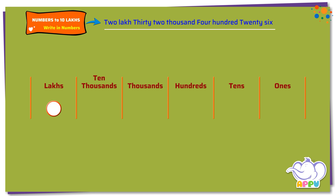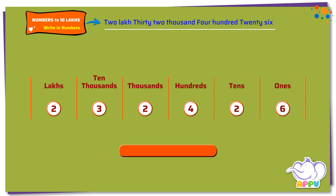We have two lakhs, three ten thousands, two thousands, four hundreds, two tens, and six ones. So the answer is 2 lakhs, 32,426. Fine!